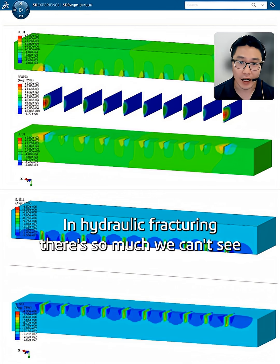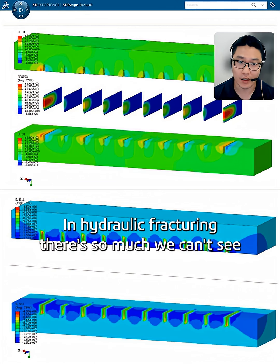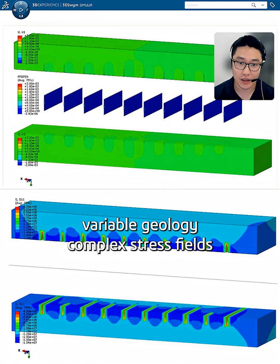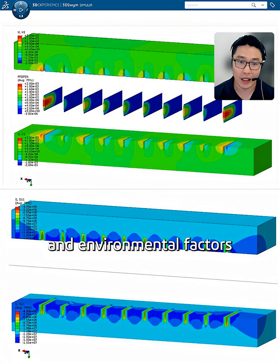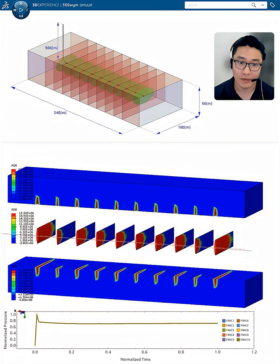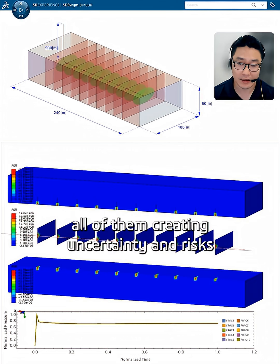Here's the thing, in hydraulic fracturing, there's so much we can't see. Variable geology, complex stress fields, unpredictable fracture growth, and environmental factors. All of them creating uncertainty and risks.